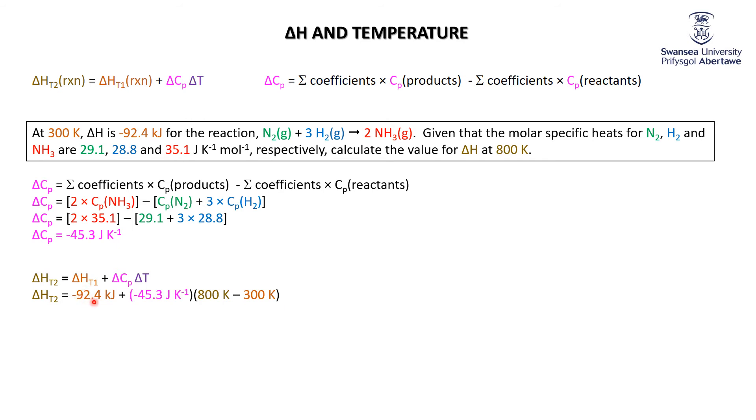Delta H at T1 equals minus 92.4 kilojoules, delta CP just worked it out minus 45.3 joules per Kelvin, times the change in temperature, 800 minus 300. And I hope at this point you appreciate that we've got a unit issue—kilojoules in one, joules in the other.